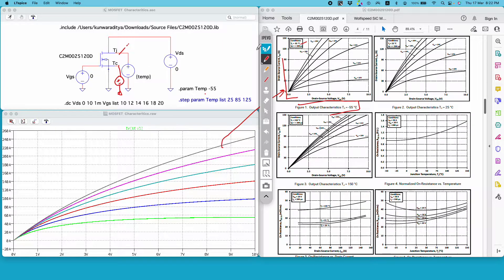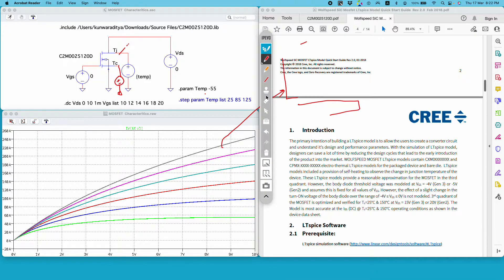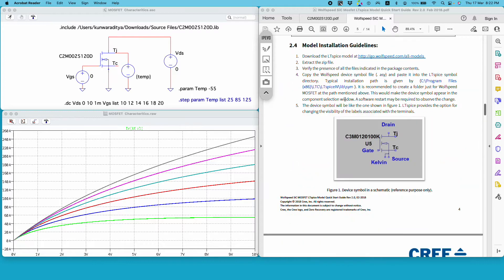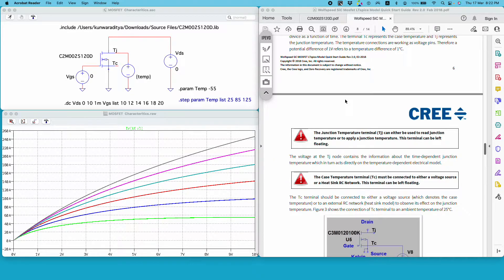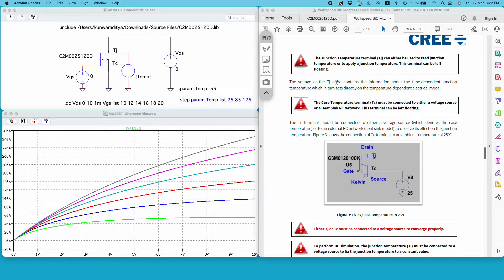So the model here clearly says that the junction terminal TJ can be used to read the junction temperature or to apply a junction temperature. So I am applying a junction temperature and you won't get any error if this terminal is floating. Similarly, case temperature must be connected to either a voltage source or heat sink RC network and this terminal can also be left floating.